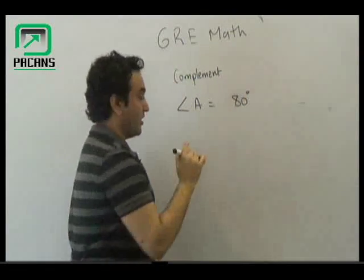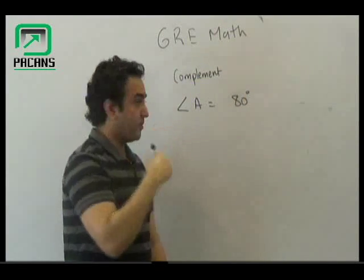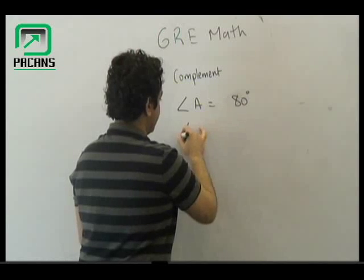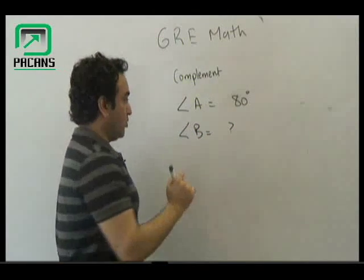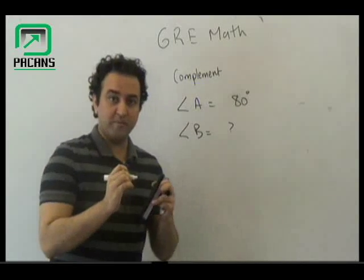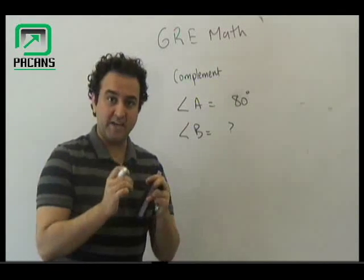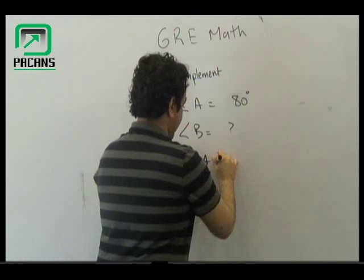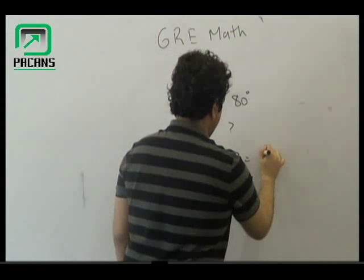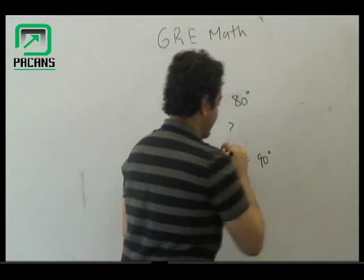And if I ask you, and if I tell you that the complement of angle A is angle B, so what would be angle B? So you know one thing that complementary angles are equal to 90. So you are going to add angle A into angle B and equal it to 90 degrees.